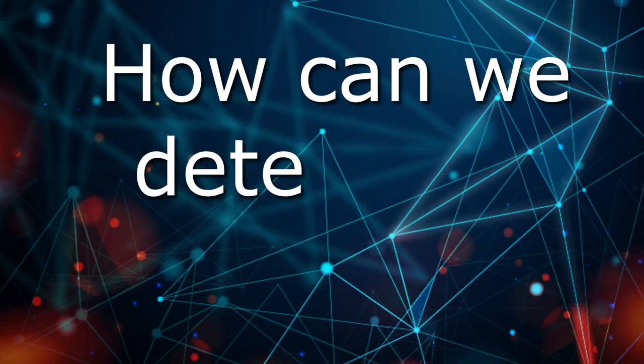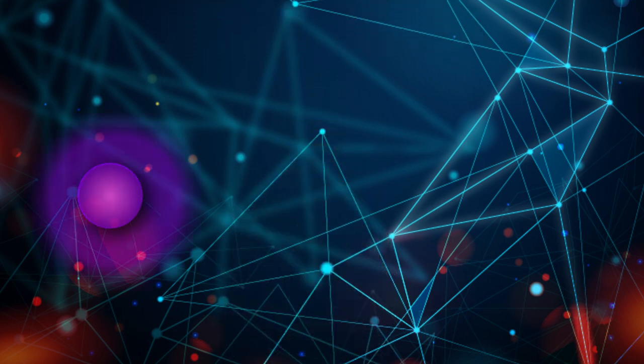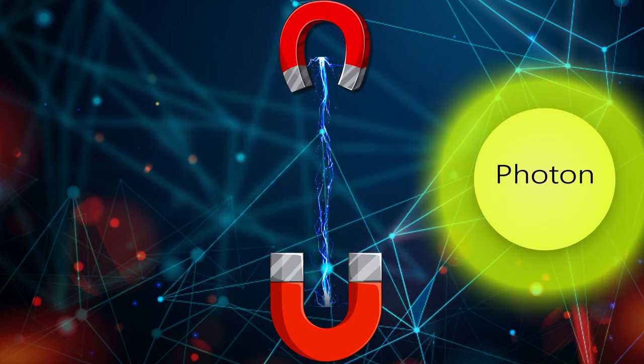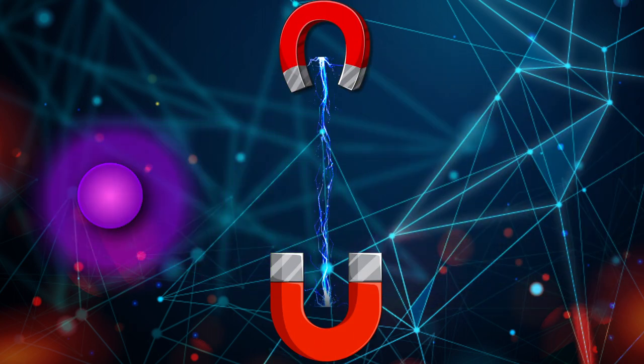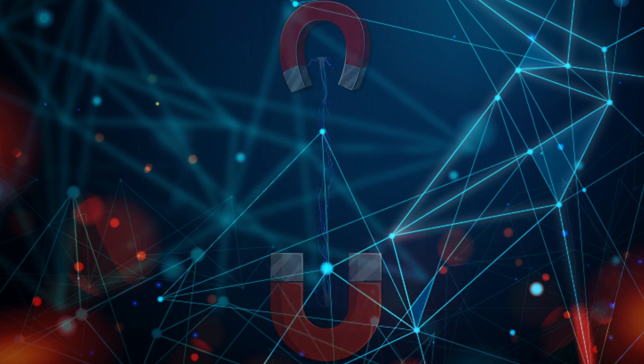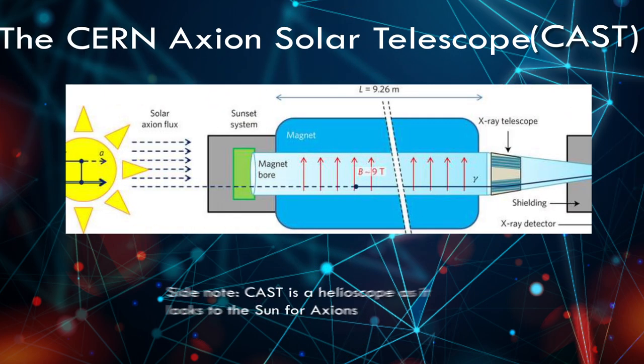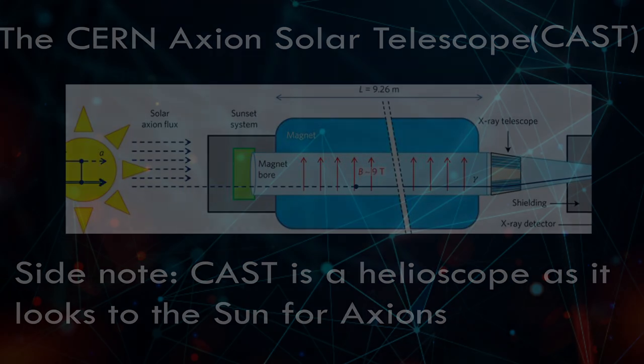If the axion doesn't interact with anything, how can we detect it? Peccei-Quinn in 1983 answered this question by theorizing that the axion would decay into a photon after passing through a strong magnetic field and vice versa, as it would interact with the electromagnetic field. Telescopes such as CAST are screening the universe using this method to detect this ghost particle.